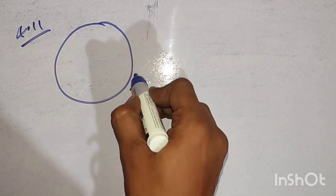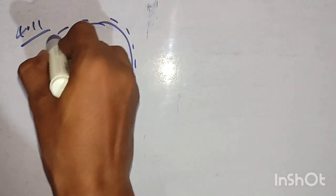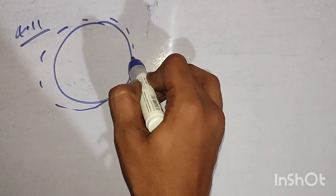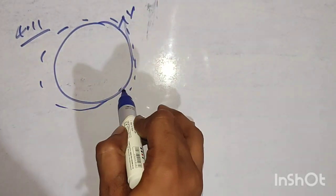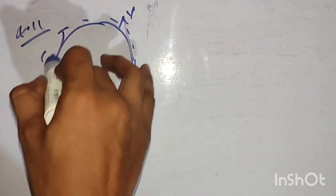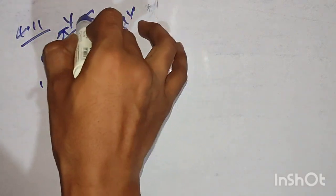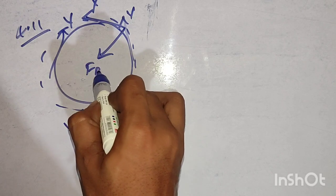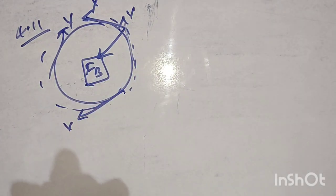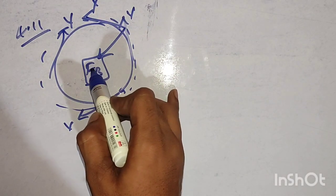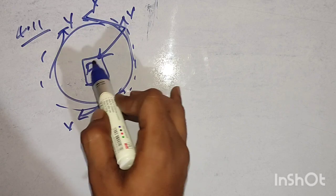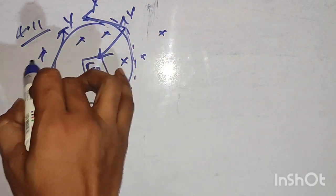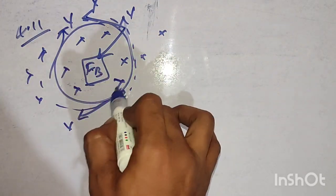Always electrons are revolving around the orbit. This is the velocity of the electron direction. This one is the force in the magnetic field. The magnetic field force is vertical. Here, the magnetic field is represented by an x-mark or dot line.